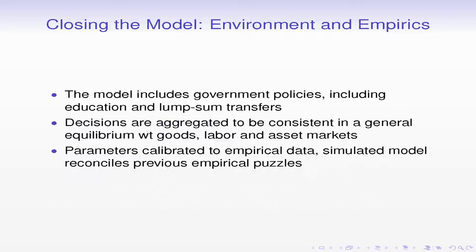To close the model, we include government policies like progressive taxation and capital taxation, and most importantly for this talk, education subsidies and lump-sum transfers. Lump-sum transfers capture means-tested transfers for poor households. We solve for this model in stationary equilibrium—you can think of this as a very long-run outcome of a change in policy—rather than looking at transition paths or aggregate shocks.